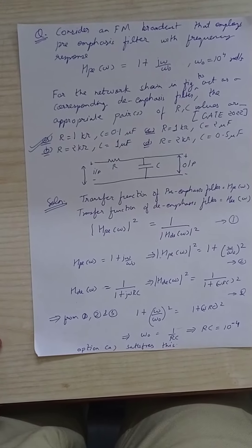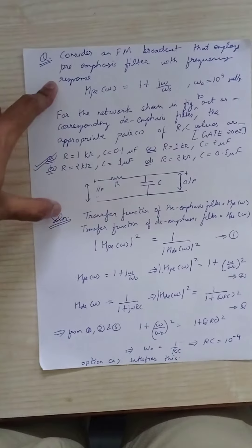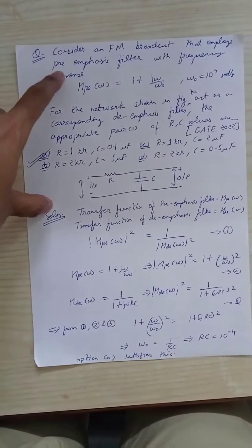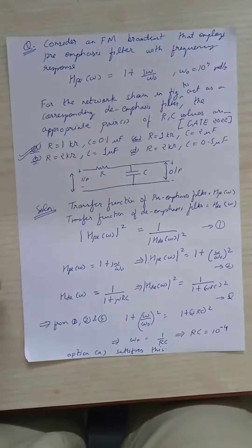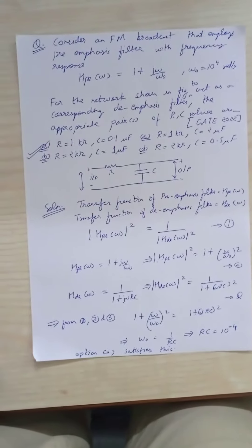This question was asked in GATE 2022. Consider an FM broadcast that employs a pre-emphasis filter with frequency response Hp(ω) = 1 + jω/ω₀, where ω₀ = 10⁴ radians per second.